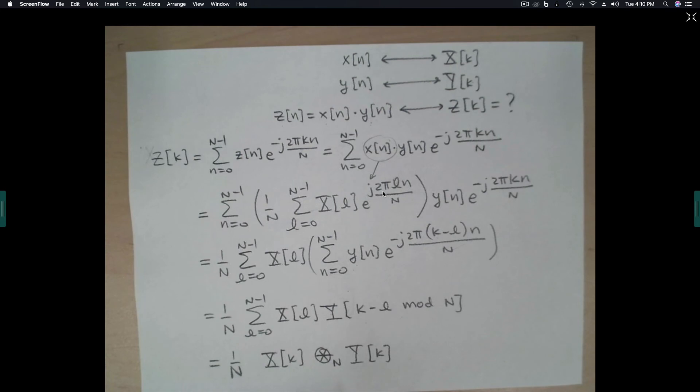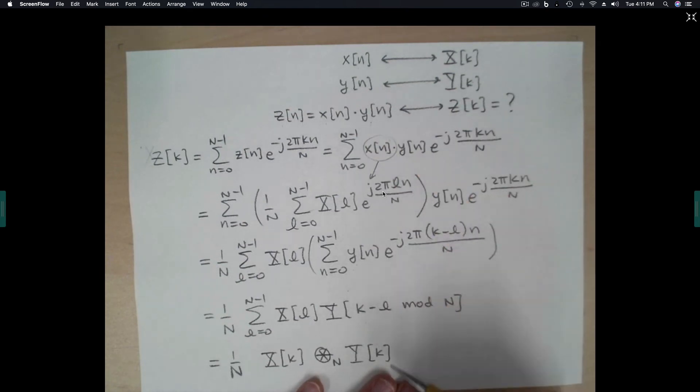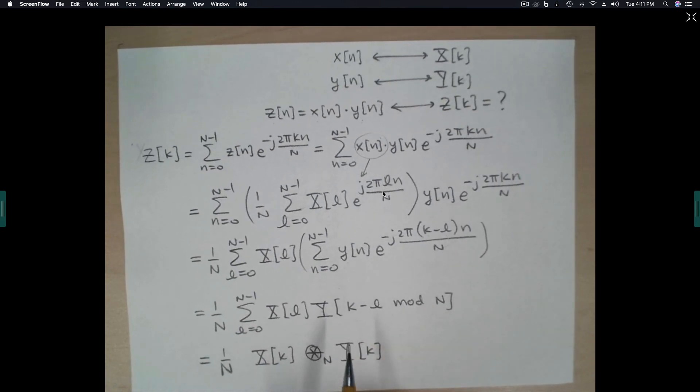So this property is interesting because in the time domain, we're multiplying two sequences together, two n-point sequences, and in the frequency domain, we do circular convolution divided by n. So that's the transform property for, we'll call that the multiplication or maybe the modulation property, maybe the windowing property depending on what type of signals we're dealing with. But in general, in the time domain, if you multiply in the frequency domain, you do circular convolution with the DFT.